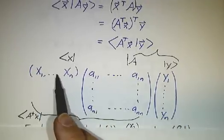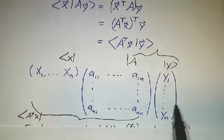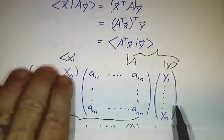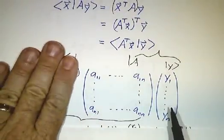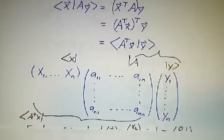Whenever you have a row times a matrix times a column, you can think of it as a row times a matrix times a column, or you can think of it as a row times a matrix times a column.